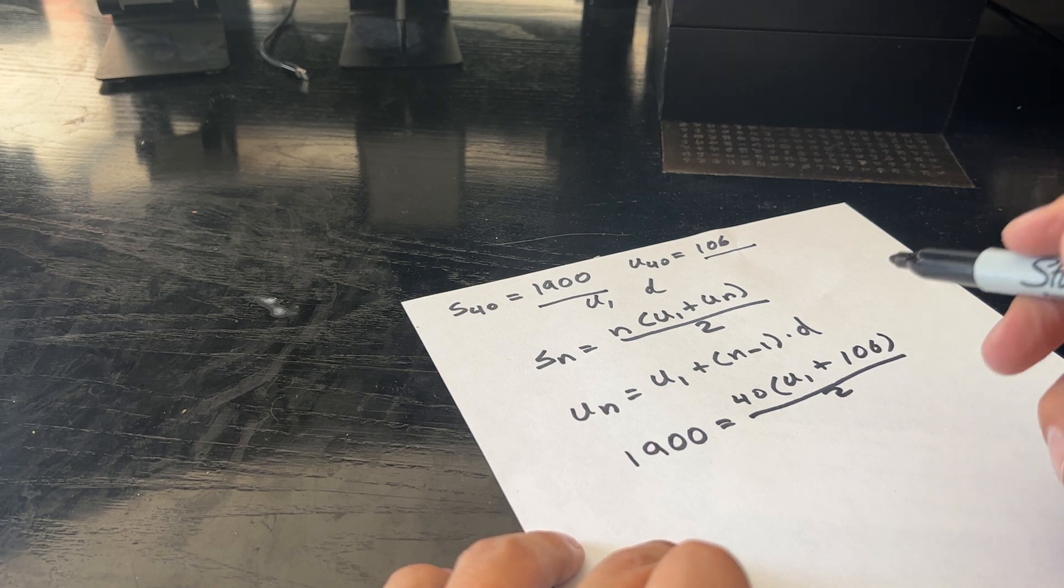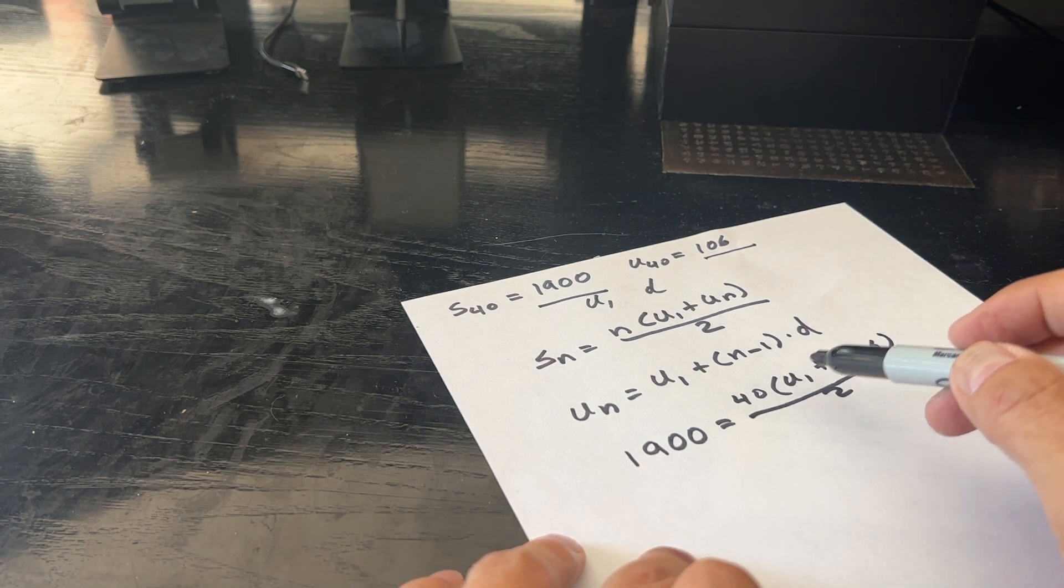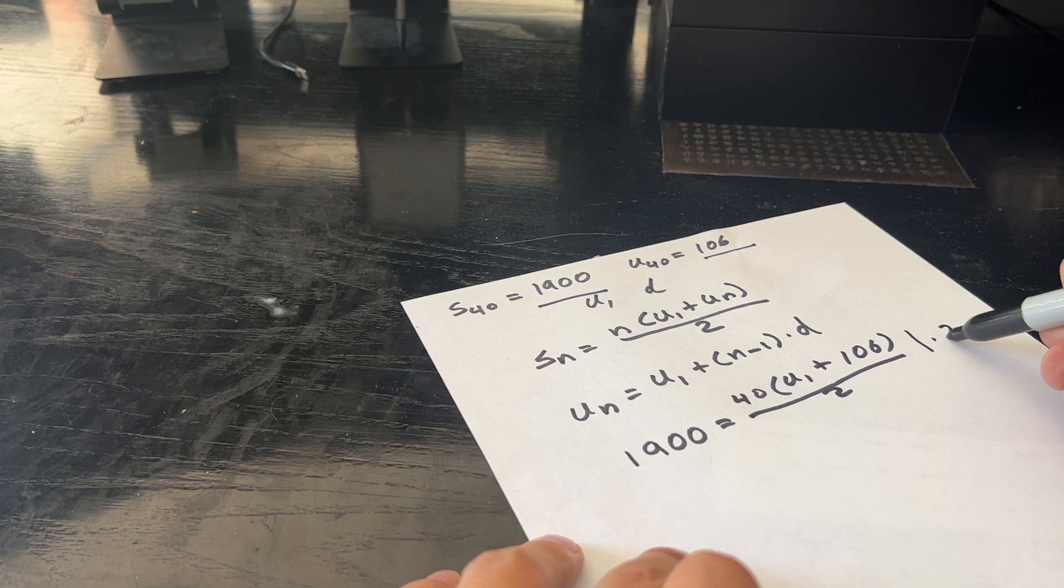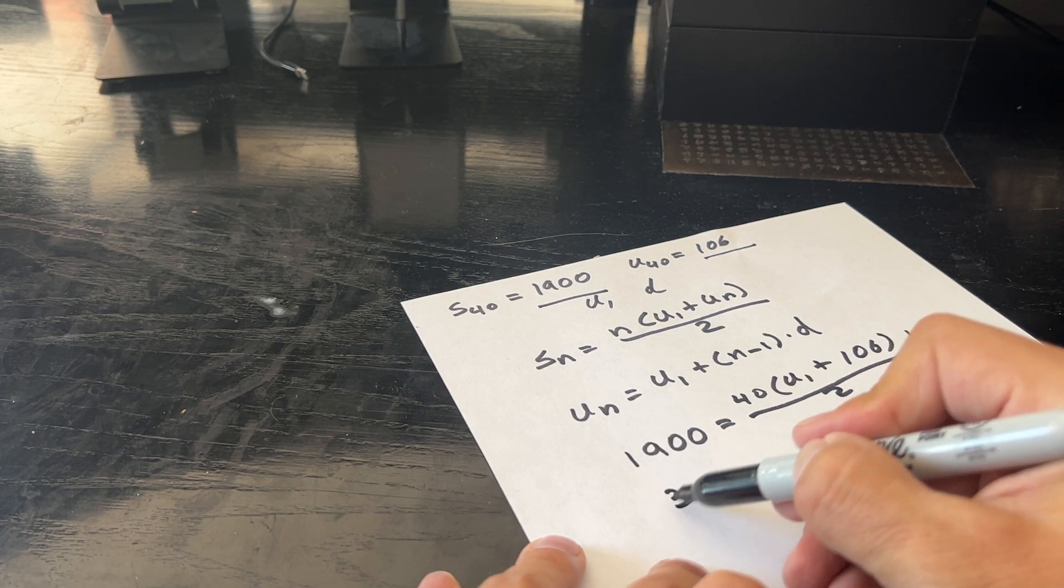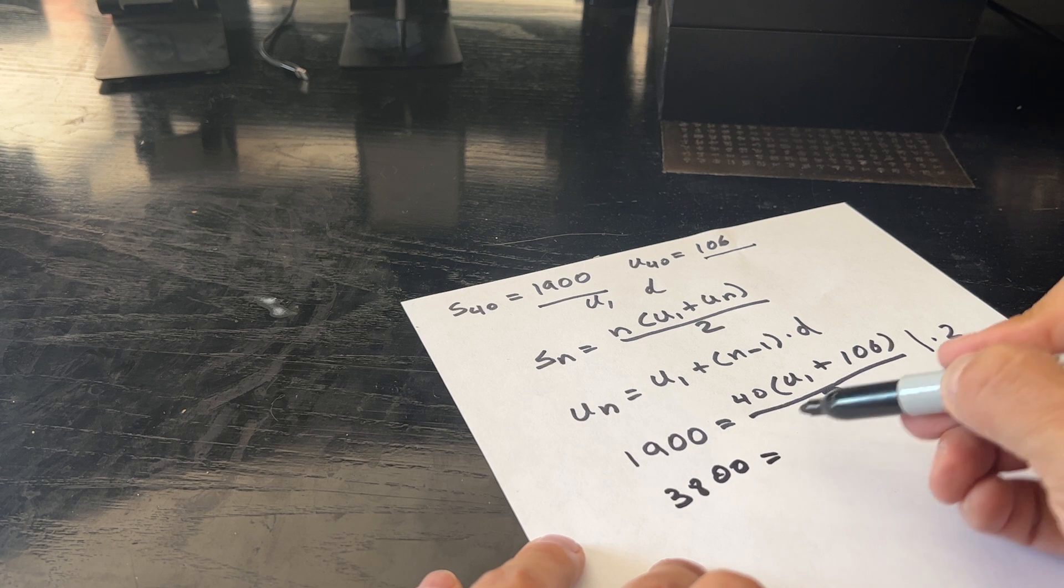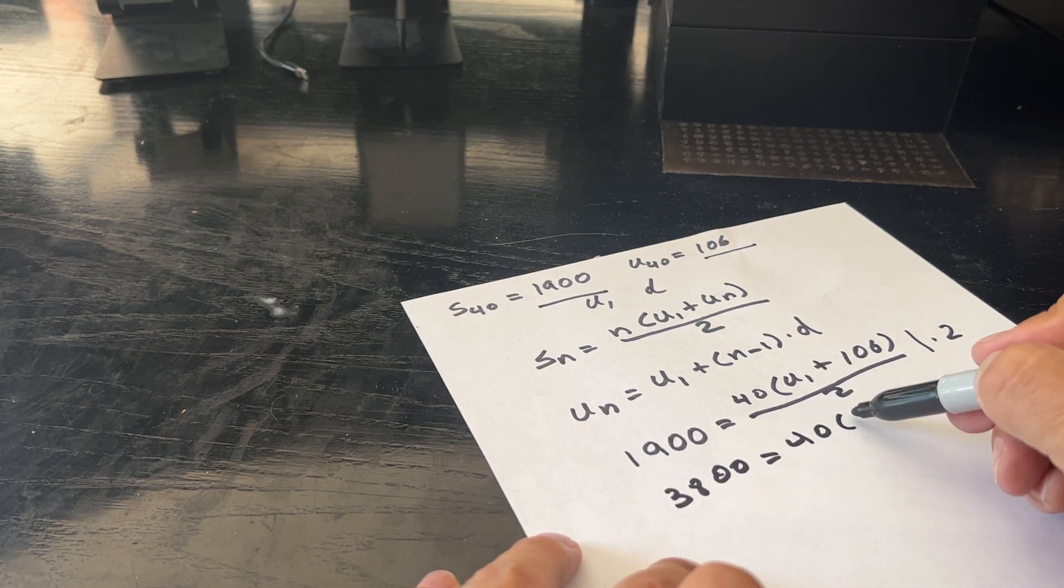So here, we're going to solve for U1. So first, we multiply times 2 on both sides to get rid of the 2. This is 3,800 equals 40 times U1 plus 106.